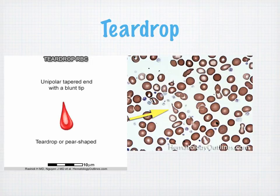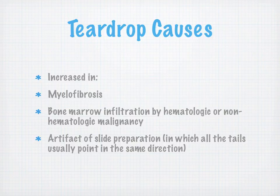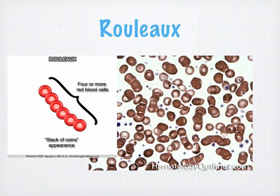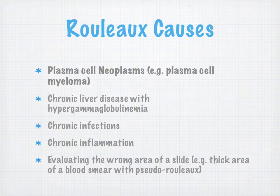Teardrop cells — causes include myelofibrosis, bone marrow infiltration by hematologic or non-hematologic malignancy, and artifact where tails usually point in the same direction. Rouleau occurs when four or more red blood cells stack like coins. Causes include neoplasms, plasma cell myeloma, chronic liver disease, chronic infections, chronic inflammation, and evaluating the wrong (thick) area of the slide. I encourage you to create a pseudo-Rouleau in lab so you can see what it looks like.